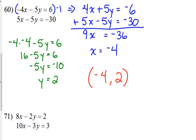Now, let's look back at number 60 for a second. We had to multiply one of the equations by negative 1 to set it up for the actual elimination process.